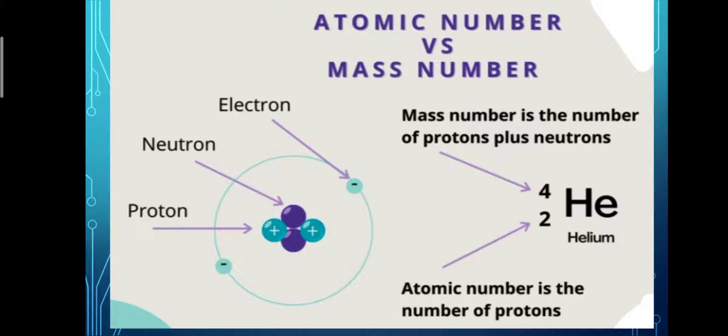Now the atomic mass or mass number. The mass number is the sum of the number of protons and neutrons found in the nucleus. For example, the atomic mass of helium is 4. It means helium nucleus contains 2 protons and 2 neutrons.